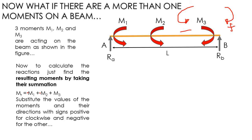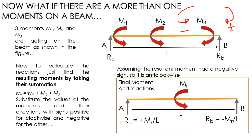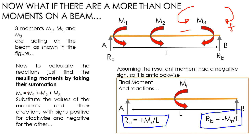If M1 and M2 are anti-clockwise, they are both negative; and M3 is clockwise, so it is positive. We then calculate the resultant and apply the formula: RA = MR/L and RB = −MR/L.